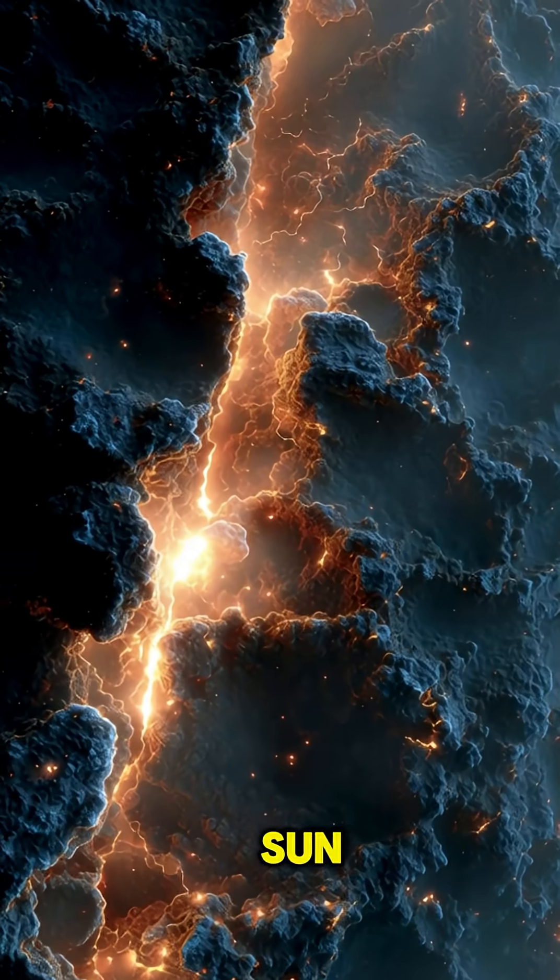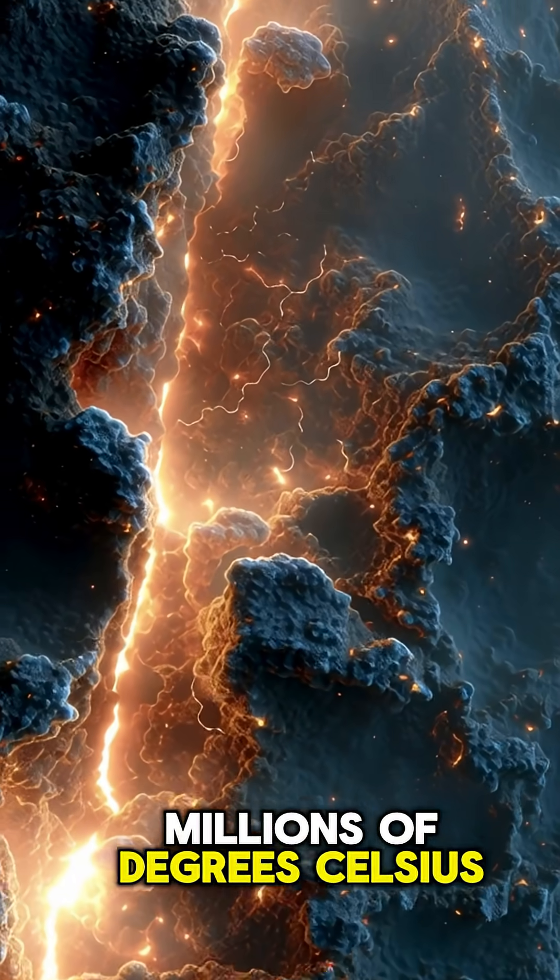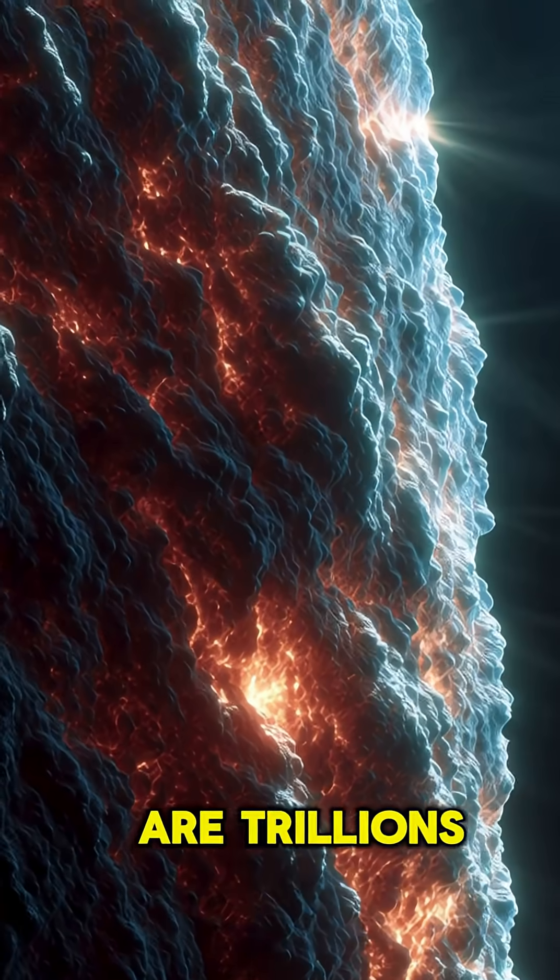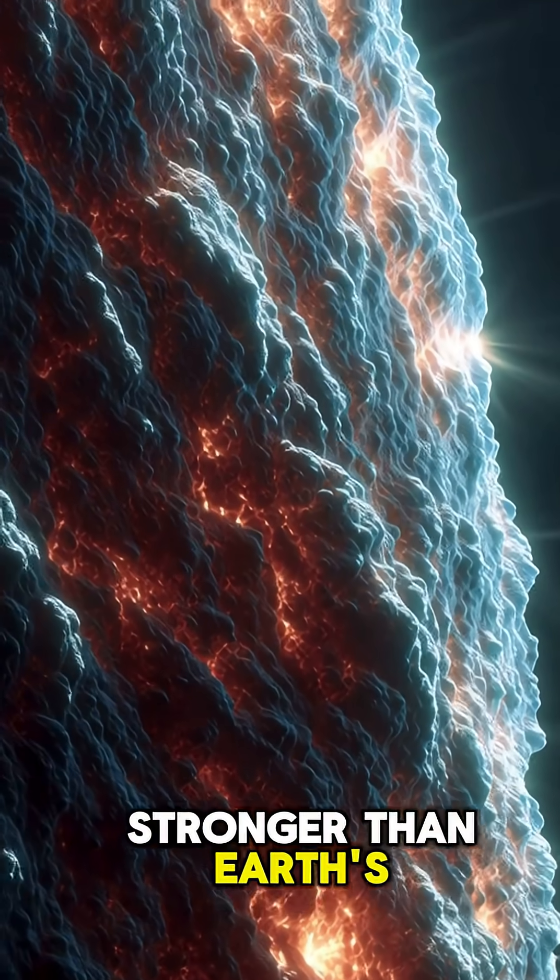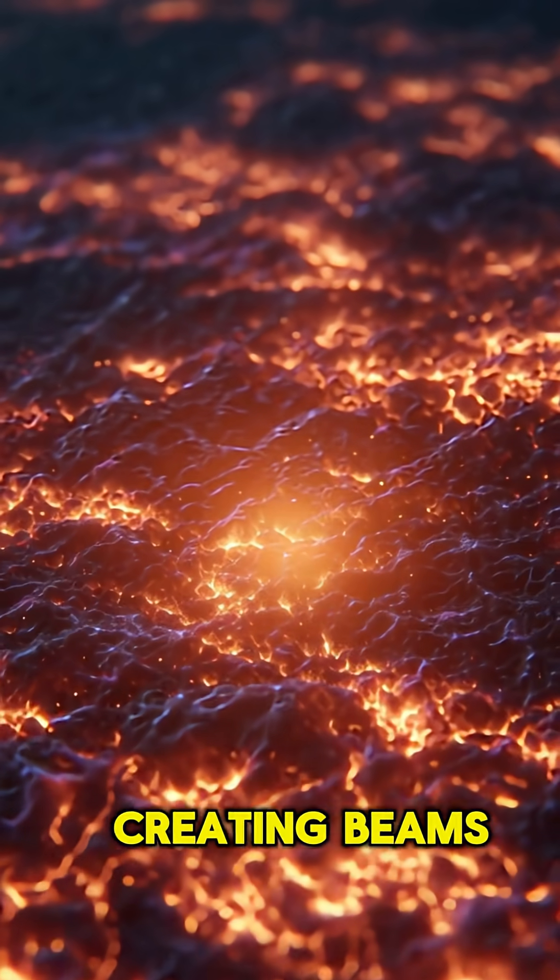The surface is unimaginably hot—millions of degrees Celsius—and the magnetic fields are trillions of times stronger than Earth's. Many neutron stars spin hundreds of times per second, creating beams of radiation that shoot across space like cosmic lighthouses.